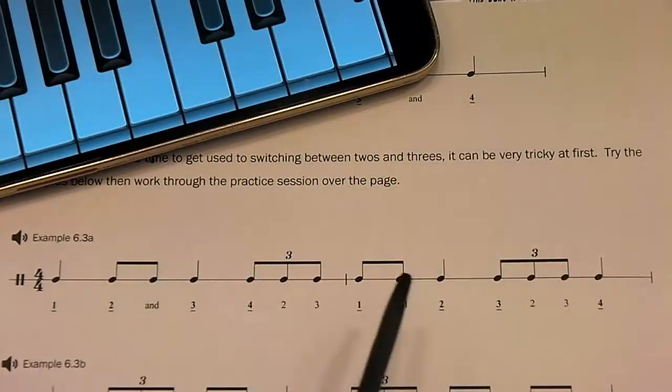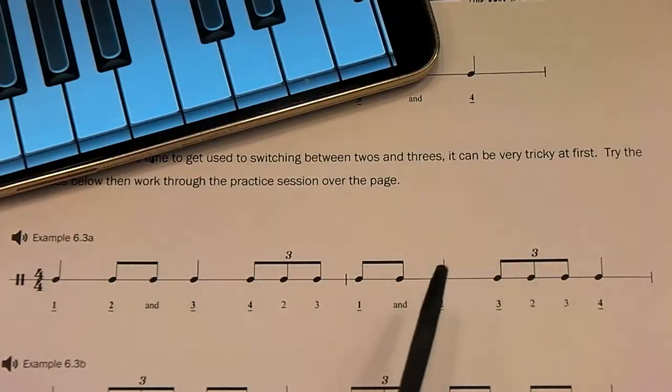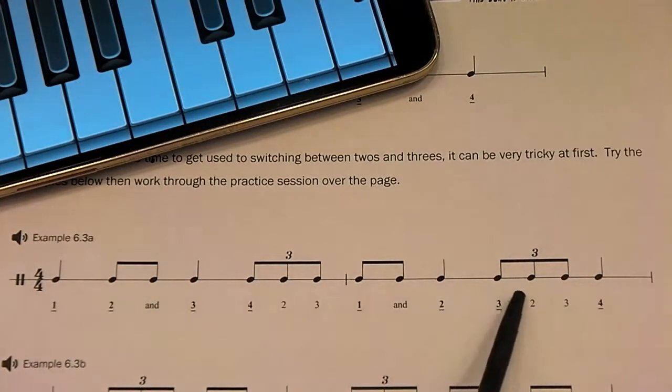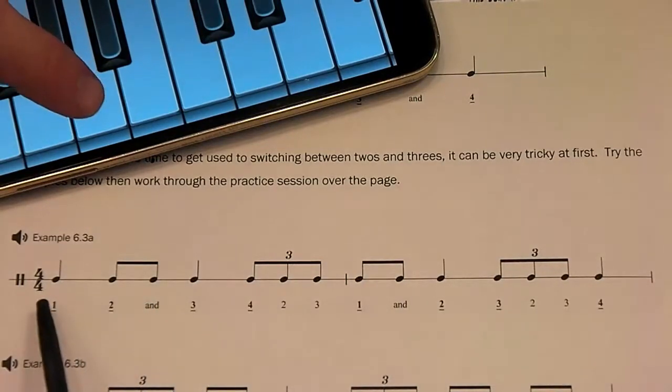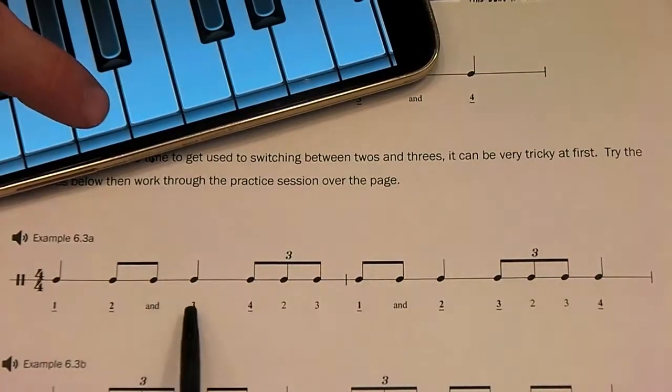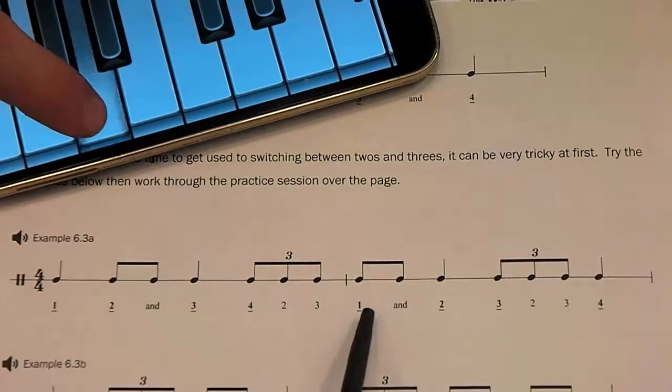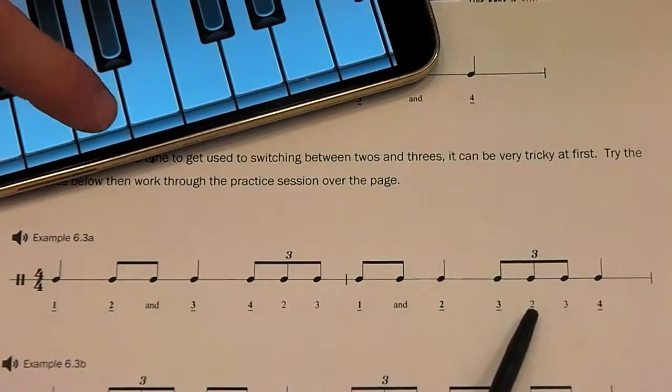Here in example 6.3a we have another rhythm which mixes up quaver triplets with regular quaver pairs. 1, 2 and 3, 4, 2, 3, 1 and 2, 3, 2, 3, 4.